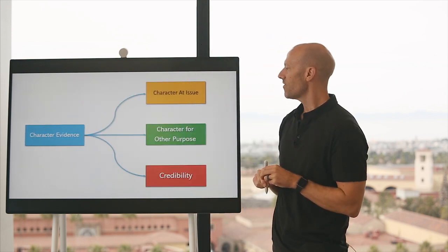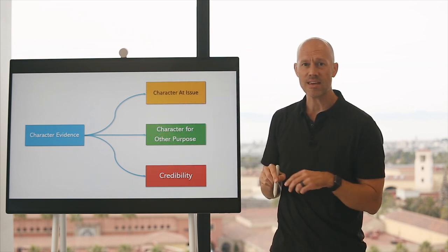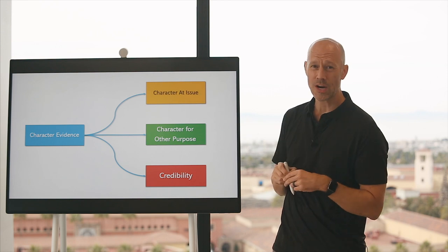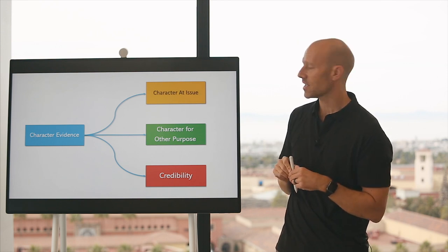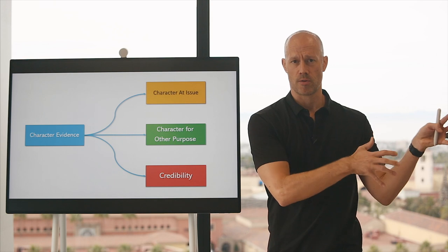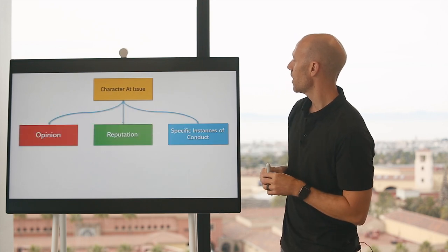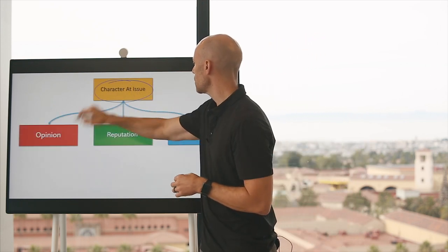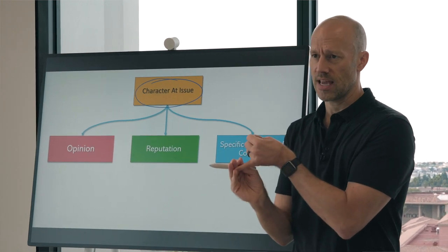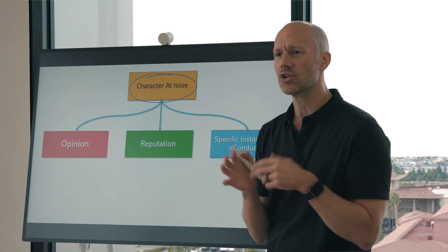In the event we're talking about character evidence, we then want to see what are the occasions where it may be allowed. There are, in essence, three occasions where it can be allowed: one is where the character is actually at issue in the case; another is when the character evidence is being offered for some other purpose; and finally, the credibility of the witness. Let's first look at when a person's character is actually at issue in the case. This comes up a lot in negligent hiring cases or negligent entrustment cases, where the character is specifically at issue.